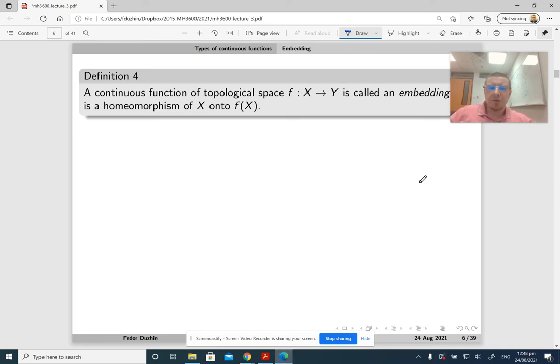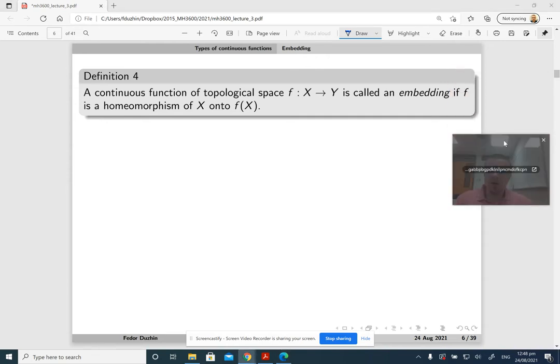A continuous function from a topological space to another topological space is called an embedding if it is a homeomorphism onto its own image. This means that f should be continuous.